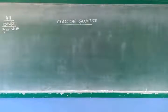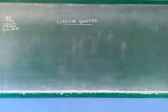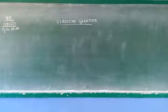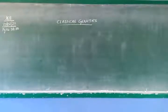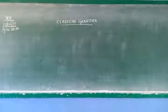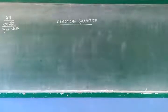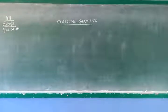Good morning students. Today we are going to deal with Chapter 2, Classical Genetics. In this chapter we are going to look at heredity and variation, then Mendelism, monohybrid cross, dihybrid cross and interaction of genes — that is intragenic and intergenic interactions, polygenic inheritance and extrachromosomal inheritance. These are the portions we are dealing with in this chapter.